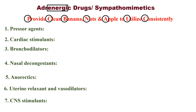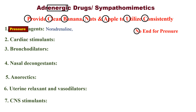Number one: Pressure agents. Remember 'No End For Pressure' — everyone has one or the other kind of pressure. Here, N stands for Noradrenaline, E for Ephedrine, and P for Phenylephrine.